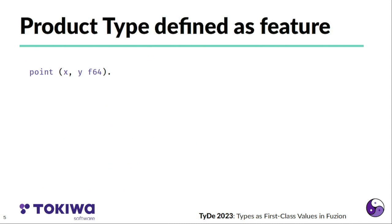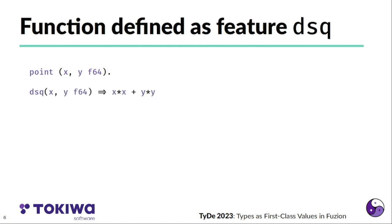I'll give some examples. Here is an example how a product type is defined in Fuzion. You define a feature, in this case the feature point, that also defines a product type. The feature point is a constructor that constructs with two arguments, x and y, a product of two float values. A second kind of feature is a function. Here d squared is a function that takes two arguments, x and y, and computes a result, in this case the distance to the origin of the point x, y.